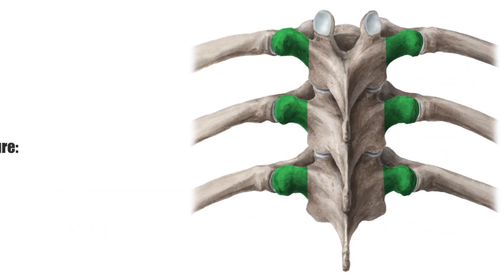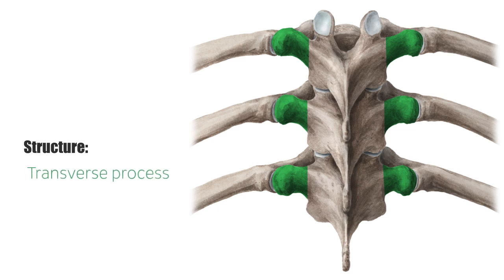Distinguishing features of the thoracic vertebrae include the presence of facets on the sides of the bodies for articulation with the heads of the ribs, and facets on the transverse processes of all, except the 11th and 12th vertebrae, for articulation with the tubercles of the ribs.